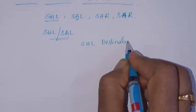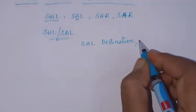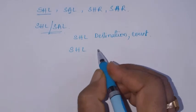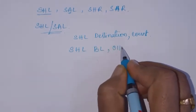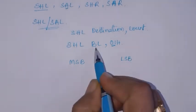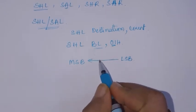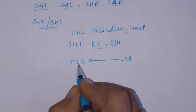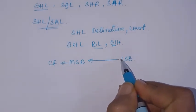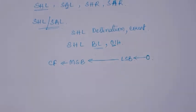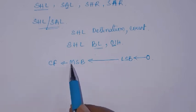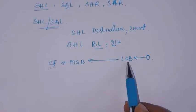The destination can be a register or a memory location, and count specifies how many bits to shift. This instruction will shift each bit present in the specified register towards left. Each bit is shifted towards left by one position. The MSB bit will be shifted to the carry flag, and zeros will be shifted into the LSB position.